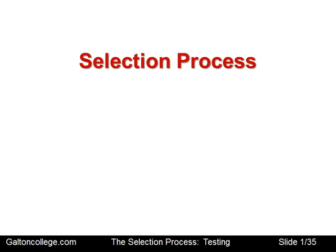We're dealing with the selection process — the selection of candidates for a particular job — and in this particular video we're going to look at testing. Sometimes employers want to test to see if the applicants are suitable for the tasks required within the job. Knowing the job specification and the application form or CV submitted by the applicant may not give a full picture, so sometimes companies engage in supplementary testing.